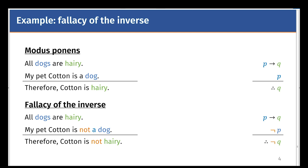Here's an example of a fallacy of the inverse compared with modus ponens. In modus ponens, you would normally say all dogs are hairy, my pet Cotton is a dog, therefore Cotton is hairy. Now that is a valid argument.